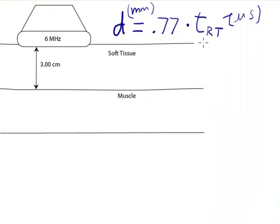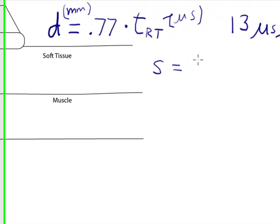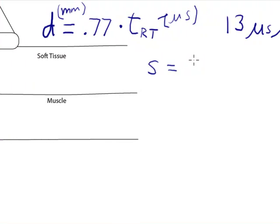First of all, let's look at this first simplification. If I look at the speed of sound in soft tissue, both of these will apply only to soft tissue. The distance is the round-trip distance divided by the time. That's going to be a round-trip time.